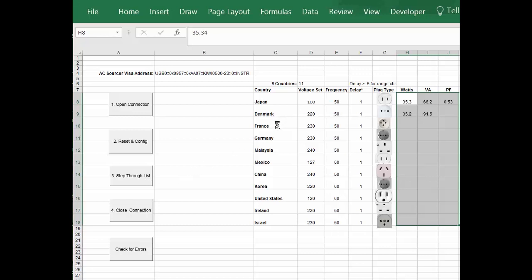The Visual Basic program will read each of the voltage and frequency combinations, set the output for our AC source, and then bring back the measurements—both the apparent power and the real power, along with power factor.